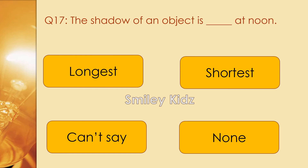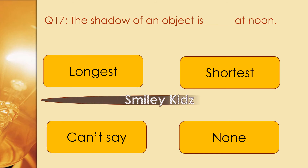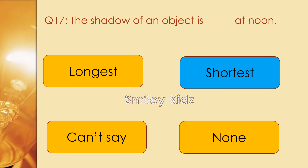Question number 17. The shadow of an object is dash at noon. Options are longest, shortest, can't say, and none. The right answer is shortest. The shadow of an object is shortest at noon.